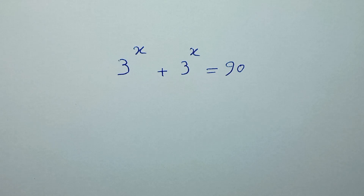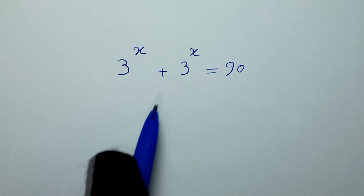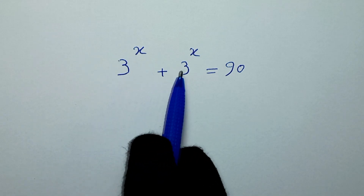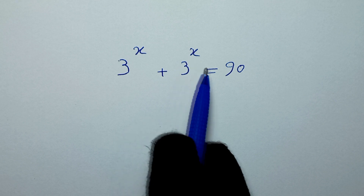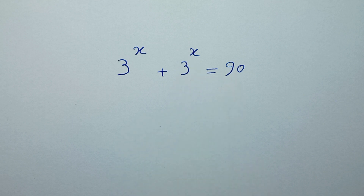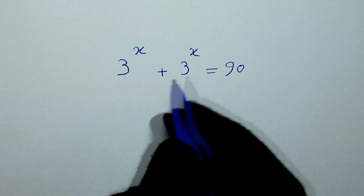Hello my friends, you're welcome to solve this math problem: 3 to the power of x plus 3 to the power of x is equal to 90. We need to find the values of x.